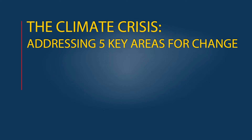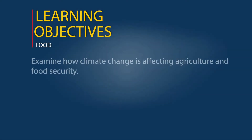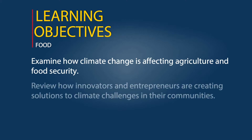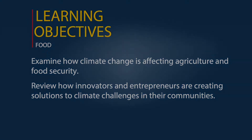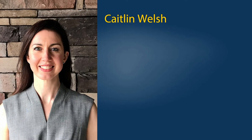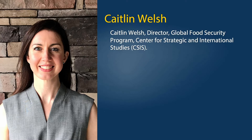Welcome to the climate crisis: addressing five key areas for change. This lesson is food. In this lesson we'll examine how climate change is affecting agriculture and food security, and look at examples of innovative solutions being implemented in local communities to mitigate and adapt to climate challenges. This lesson is written by Caitlin Welsh, Director of the Global Food Security Program at the Center for Strategic and International Studies.